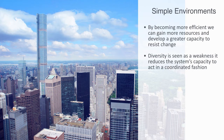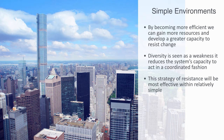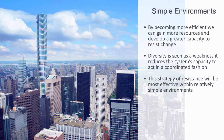This strategy of resistance will be most effective within relatively simple environments. The aim is to become the biggest fish in the pond, so that nothing will affect you. This will work in quite simple and complicated environments, as long as the whole environment is relatively stable. In order to be able to resist changes, the system needs to be in control all the time. In order for a centralized linear regulatory system to be in control, it must remove disorder from the system.